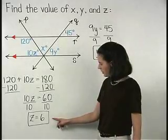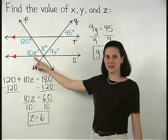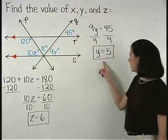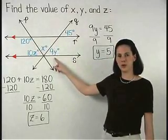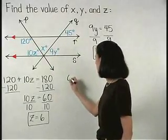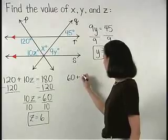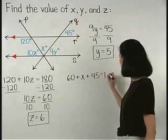And since we know that z equals 6, then 10z must equal 60. And since we know that y equals 5, then 9y must equal 45. So we have 60 plus x plus 45 equals 180.